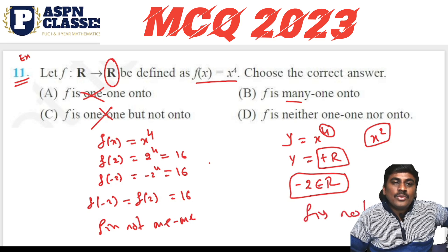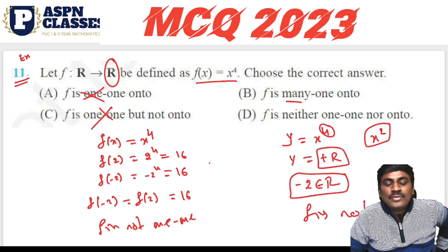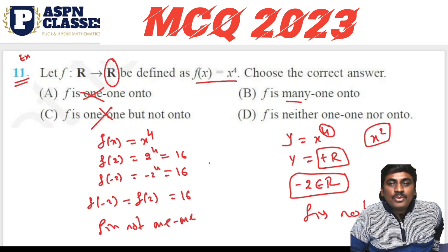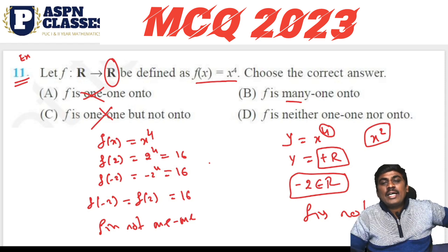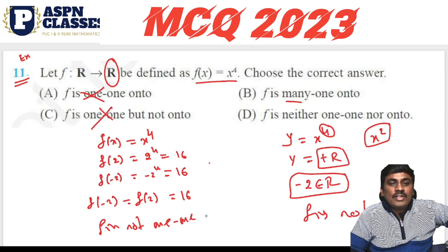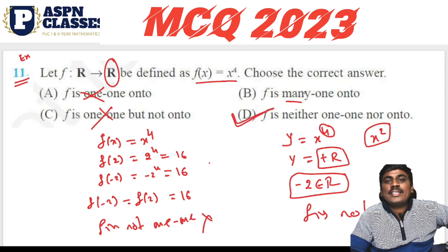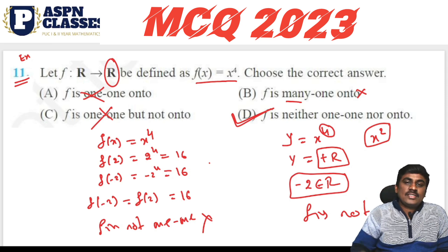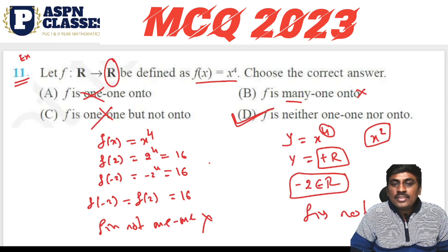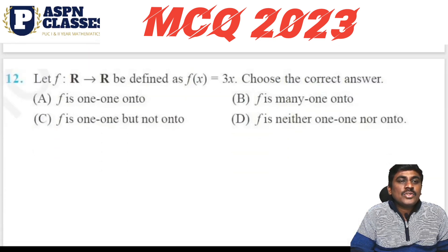Since minus 2 doesn't have any pre-image in the domain, f is not onto. Therefore the answer is: f is neither one-one nor onto. Option D is the right answer.